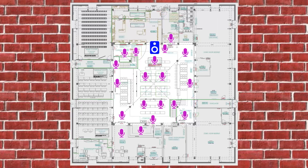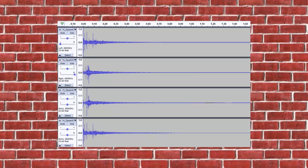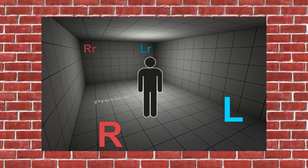I recorded the sonic character of 15 locations in my school using 4-channel impulse responses. Then I converted my recordings into individual convolution reverb effects, with the 4 channels being front left, front right, rear left, and rear right.